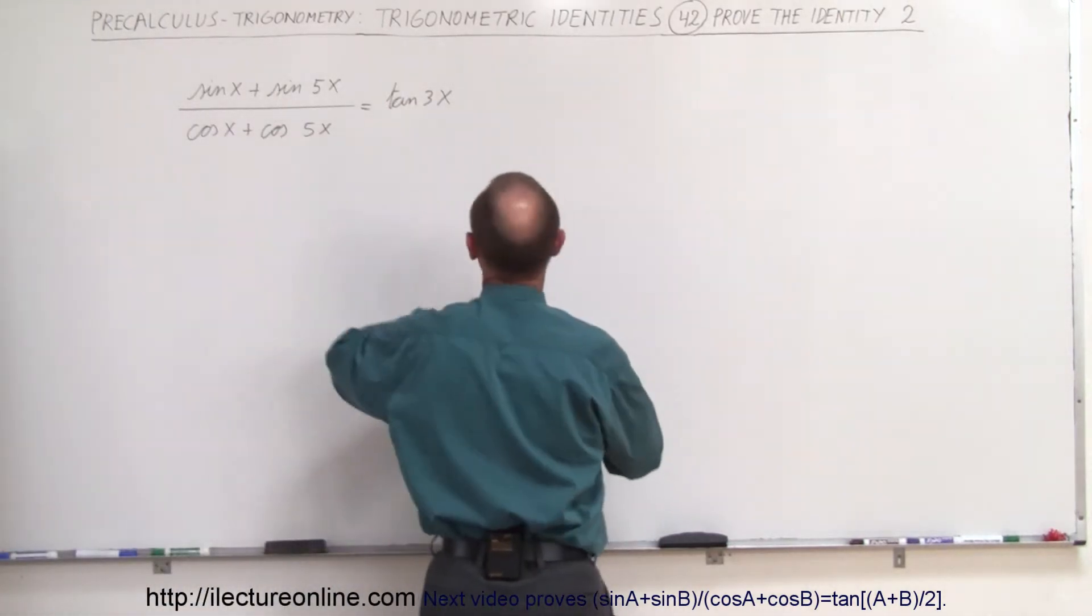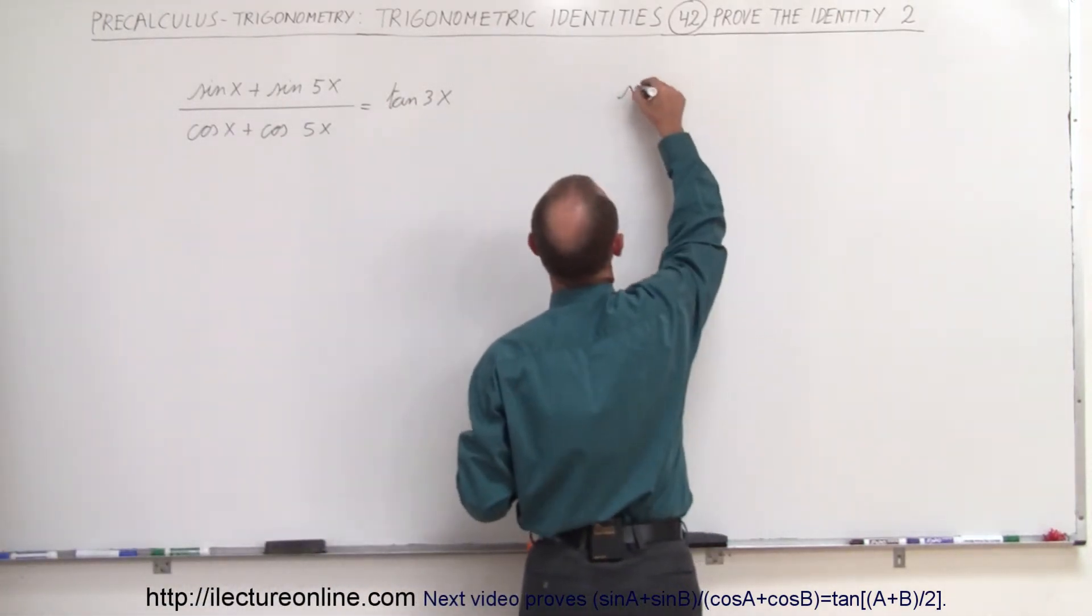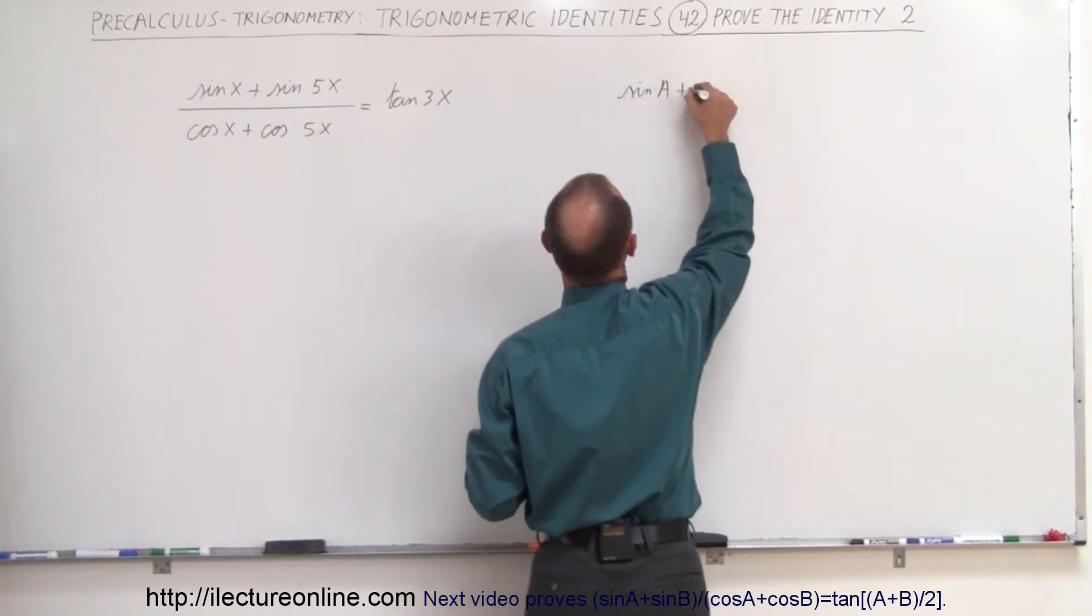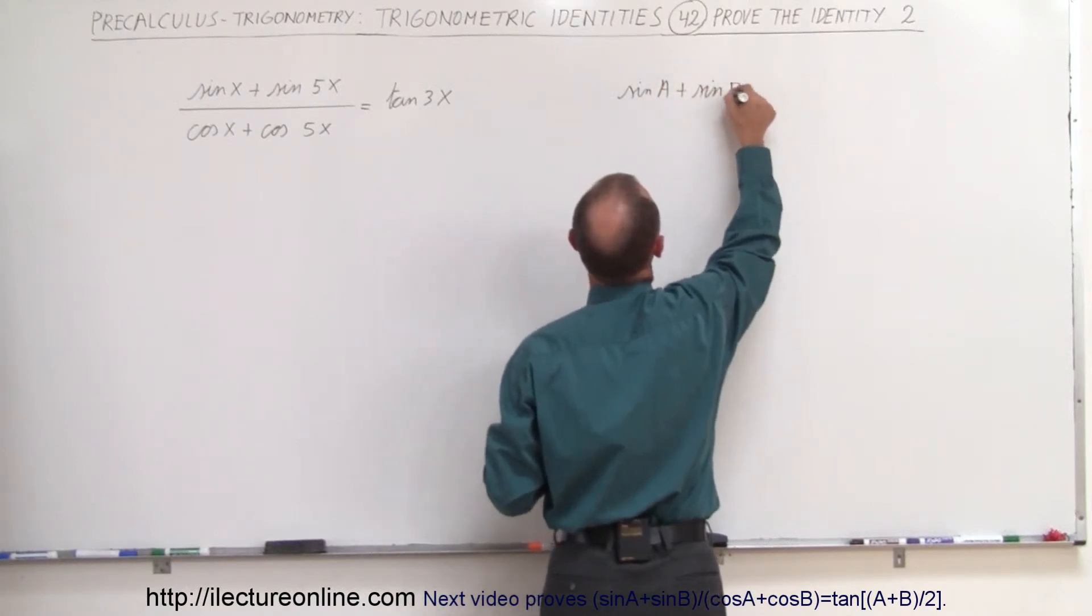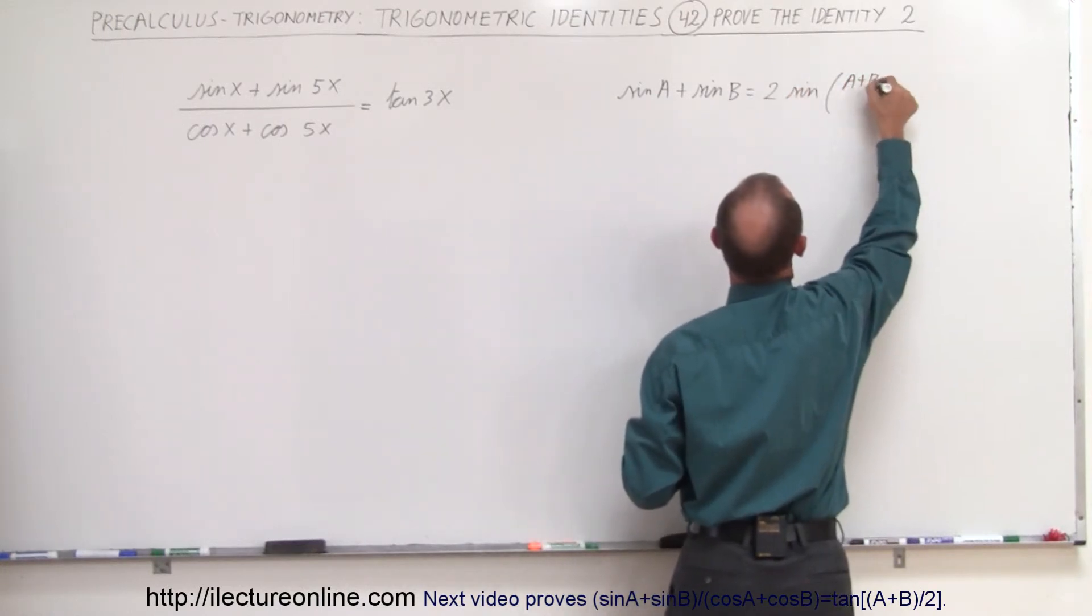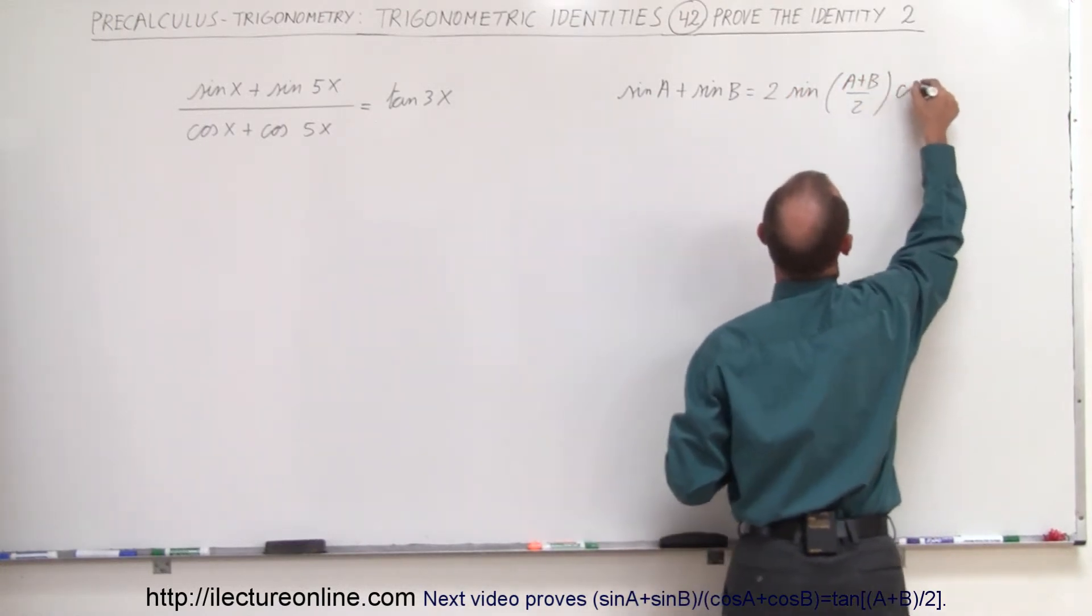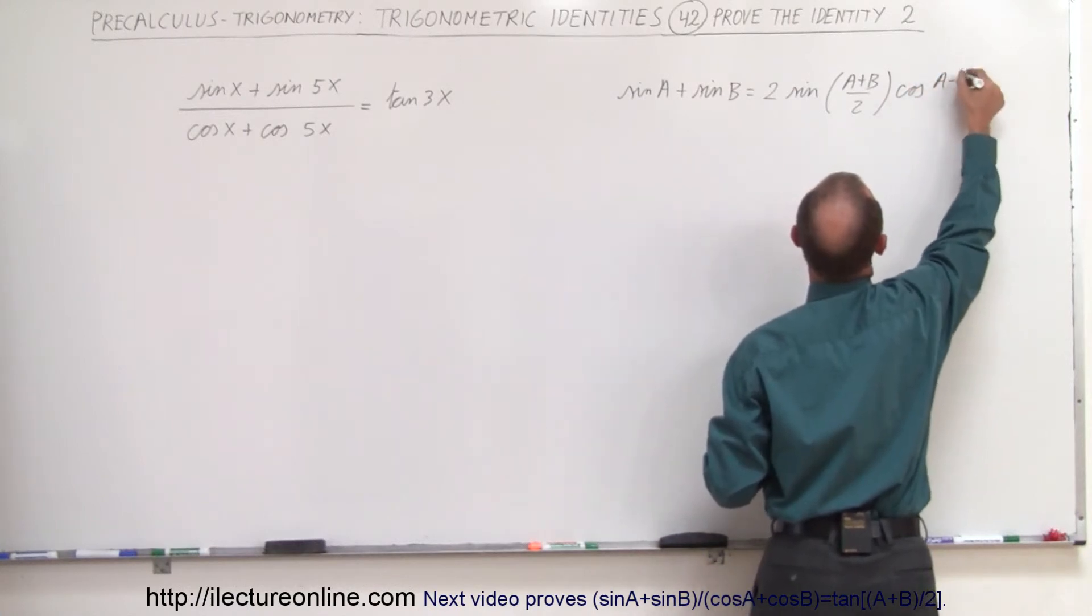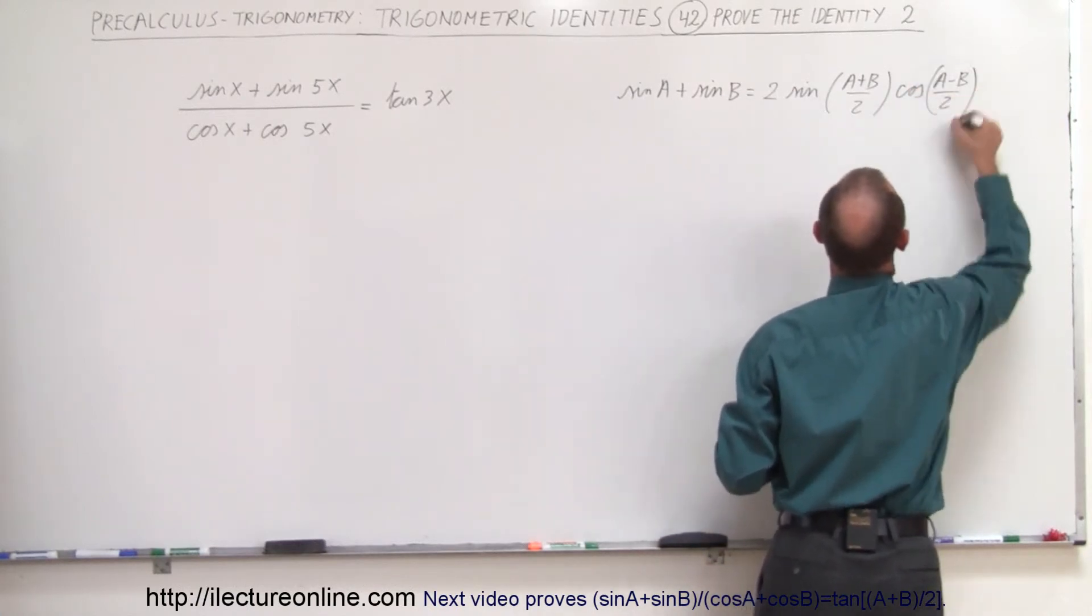So first of all we have the sum of two sines. The sine of A plus the sine of B can be written as 2 times the sine of A plus B divided by 2 times the cosine of A minus B divided by 2.